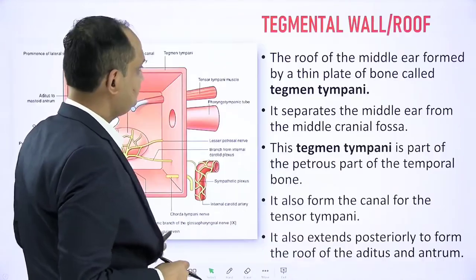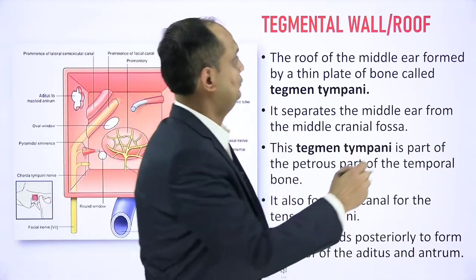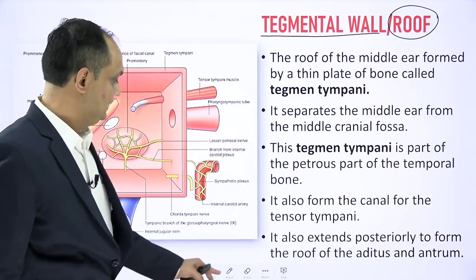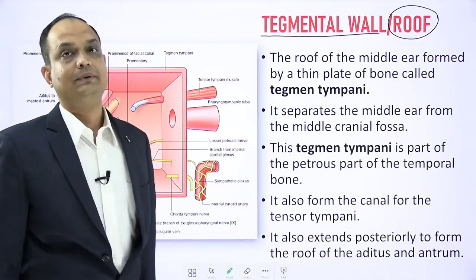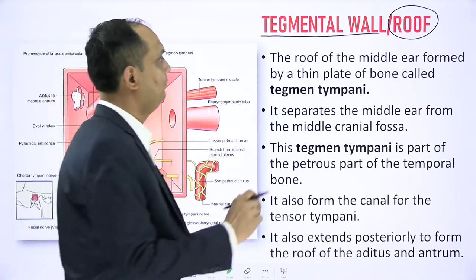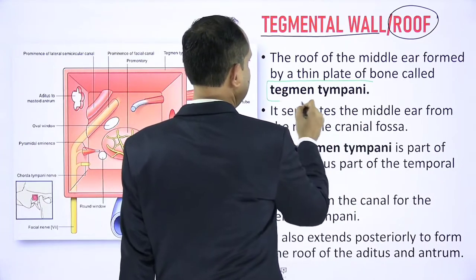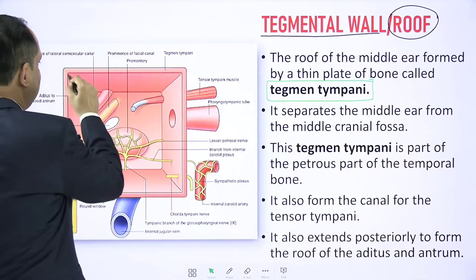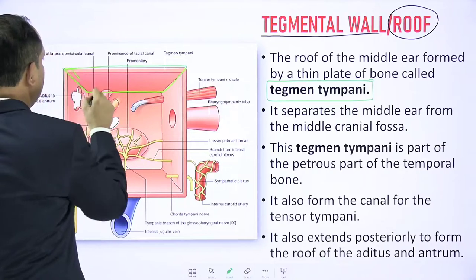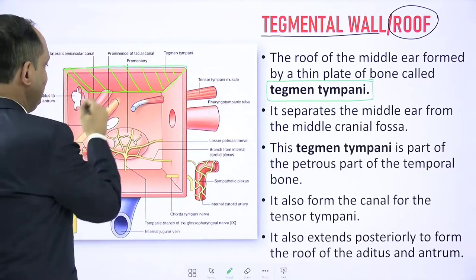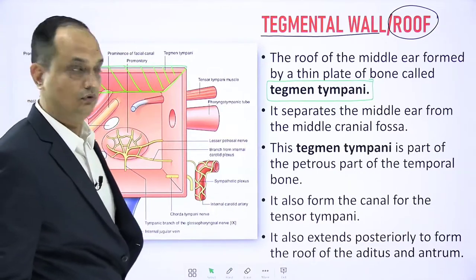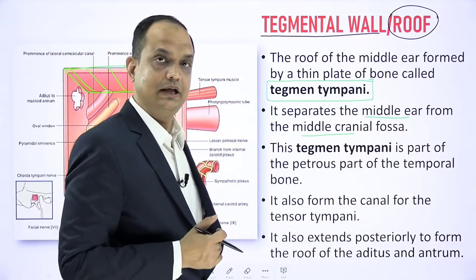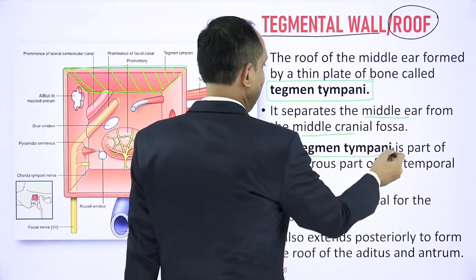Now let's discuss the roof. The roof is also known as the tegmental wall because it has a thin bony plate called the tegmen tympani. The roof separates the middle ear cavity from the middle cranial fossa, and you know that the middle cranial fossa contains the temporal lobe.